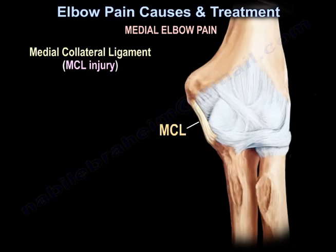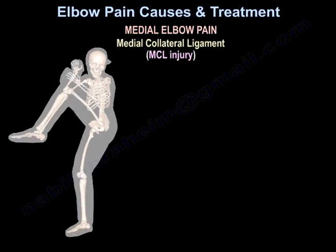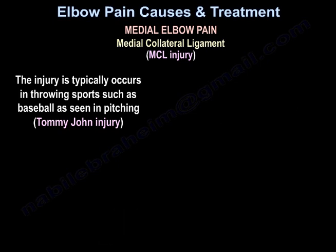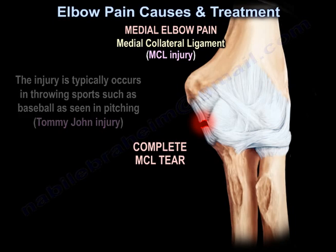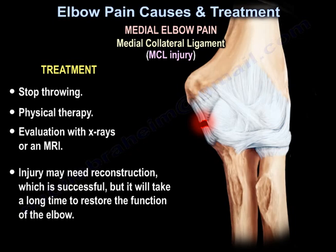Another pathology on the medial side of the elbow is the medial ulnar collateral ligament injury. The injury typically occurs in throwing sports such as baseball, as seen in pitching — it is the Tommy John injury. It can lead to chronic pain as well as valgus instability, and the condition can be potentially disabling. Treatment includes stopping throwing, physiotherapy, evaluation with X-rays and MRI. Injury may need reconstruction, which is successful, but it will take a long time to restore function of the elbow.